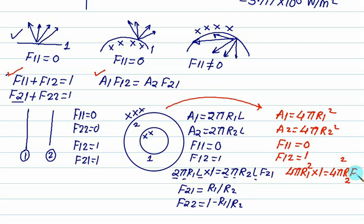So again we get F21 equals to R1 by R2 whole square and then we apply this rule. So we can calculate for F22 is 1 minus F21 is R1 by R2 whole square. So these are the quick calculation for shape factors.